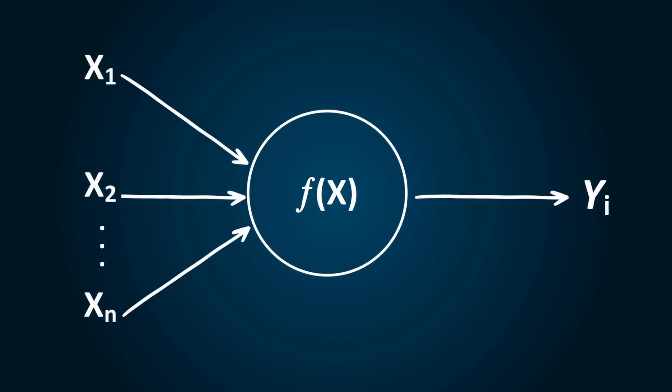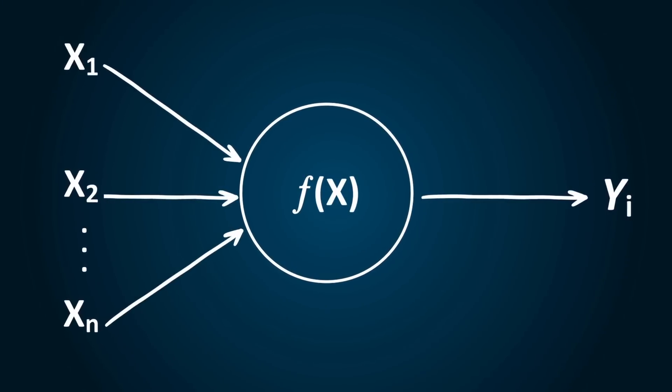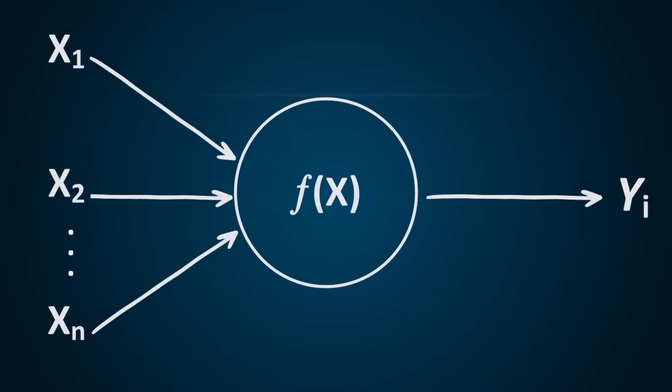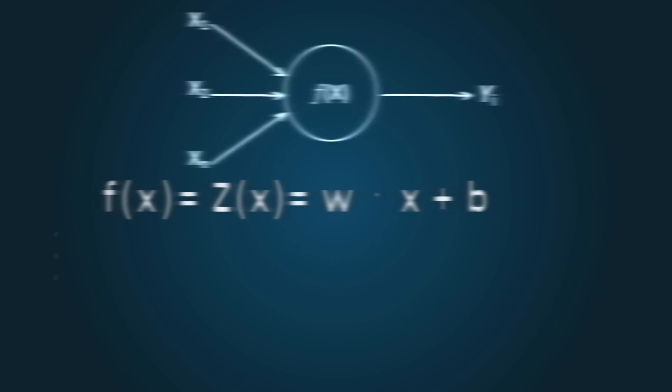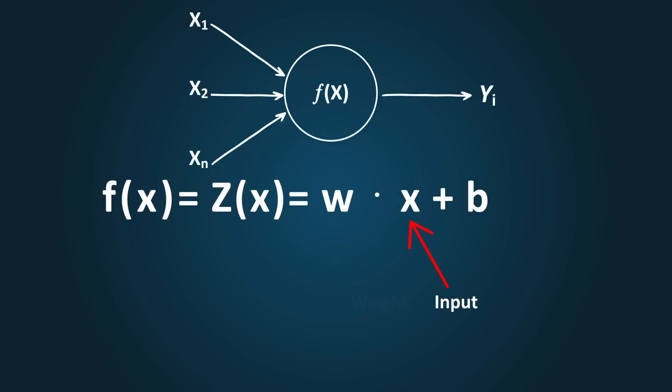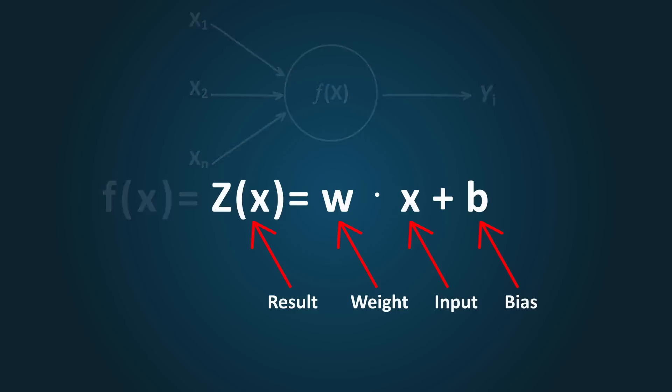So how do these artificial neurons work? Well, the essence of an artificial neuron is nothing but this simple equation from elementary school, where x is the input, w is a weight, b is a bias term, and the result or output is z of x. What does this mean? Essentially, any input x is being modified by multiplying with a weight, and then a bias is added in order to get a result or output. This allows the AI system to map the input value x to some preferred output value z of x.